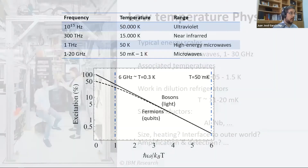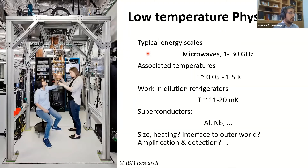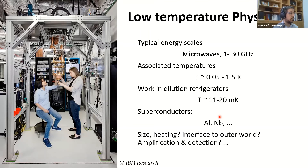We work in dilution refrigerators that can go down to tens of millikelvin, and build chips with materials like aluminum and niobium. Once we build superconducting circuits, many questions remain: the size of the system, how many circuits you can put on a chip, how they connect to the outer world, how we measure the signals the circuits create, and how we manipulate the quantum states on those chips.